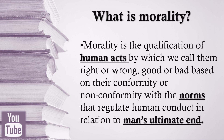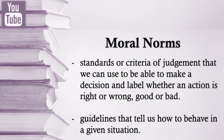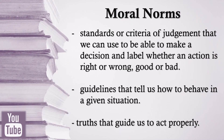In this definition, let us clarify the meaning of three important terms: human acts, norms, and man's ultimate end. When we say human acts, we refer to actions done by human beings with conscious knowledge and with the use of the will. When we say moral norms or norms of morality, we are talking about the standards or criteria of judgment used to decide whether an action is right or wrong, good or bad — guidelines that tell us how to behave in a given situation, or truths that guide us to act properly.